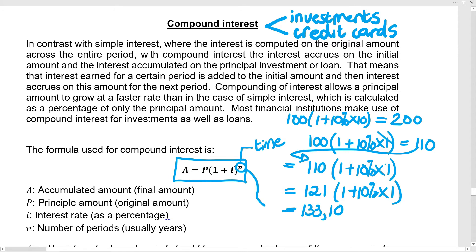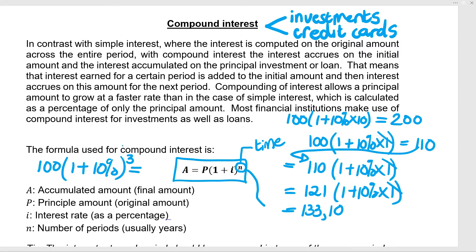I'll show you: my R133.10 comes from three years' worth of compound interest. Let's put R100 into the compound interest formula: 100 × (1 + 10%)^3. Type that in and there's your R133.10 again. You can see that as we accumulate it, it's going to grow a lot faster. My next question is: how long would it take to get to R200?